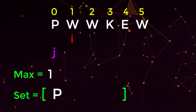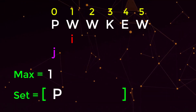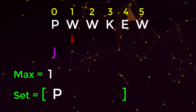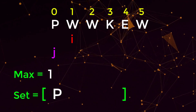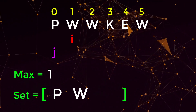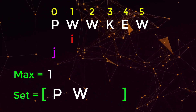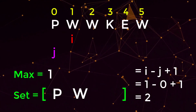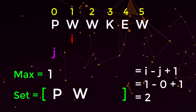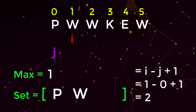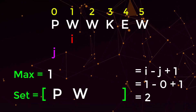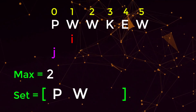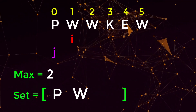Next we move our i pointer and check if 'w' is in our set. Notice the j pointer — we're not worried about that right now, we're only concerned with i. 'w' is not in our set, so we add it and compute the new length of our window: i minus j plus one now equals two, corresponding to the substring 'pw'. Since two is greater than one, we update our max.